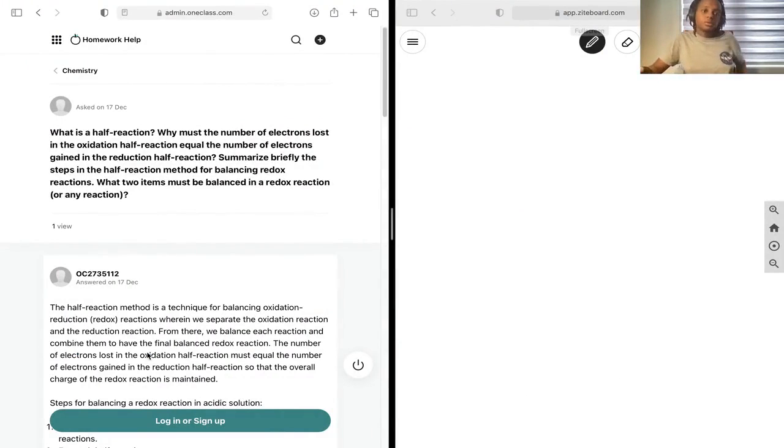Our first question is: what is a half reaction? Why must the number of electrons lost in the oxidation half reaction equal the number of electrons gained in the reduction half reaction? Summarize briefly the steps in the half reaction method for balancing redox reactions. What two items must be balanced in a redox reaction?